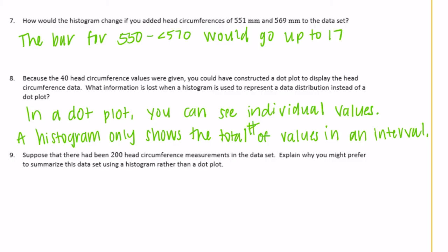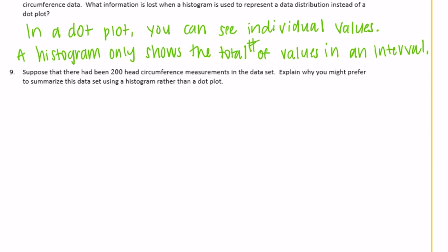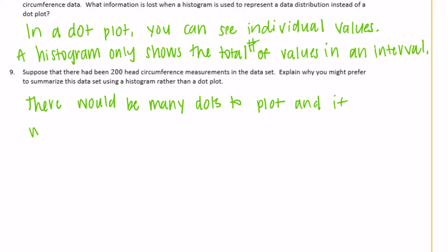Number nine: suppose there were 200 head circumference measurements. Why might you prefer a histogram over a dot plot? With 200 data points, there would be 200 dots — that's a lot and would be hard to keep track of. It's easier to show the total number of values per interval using a histogram. Histograms are better for large amounts of data.